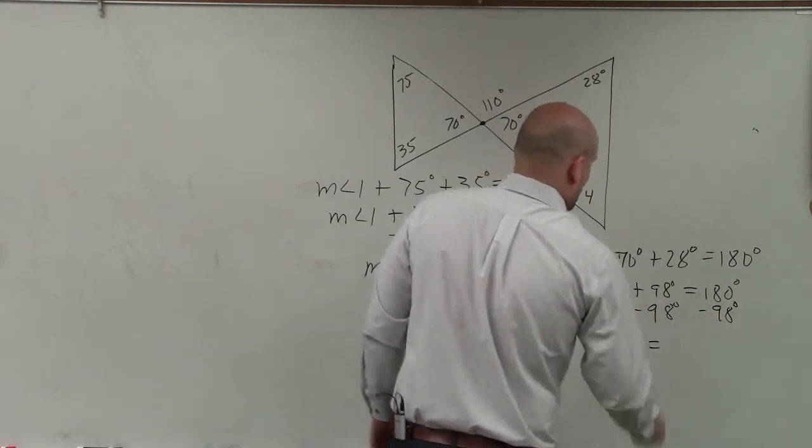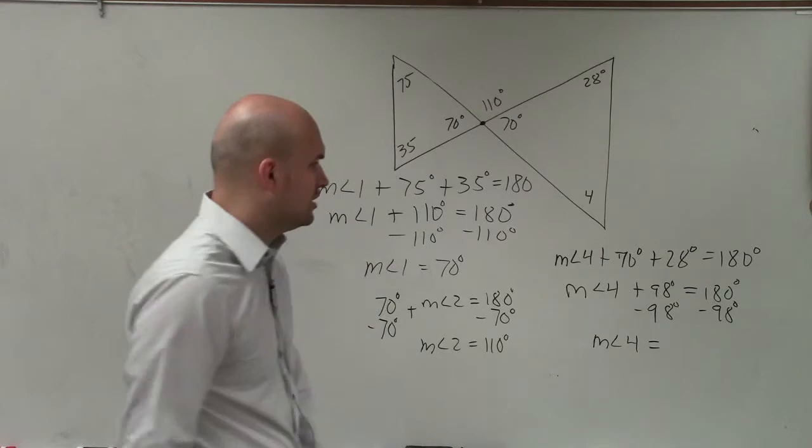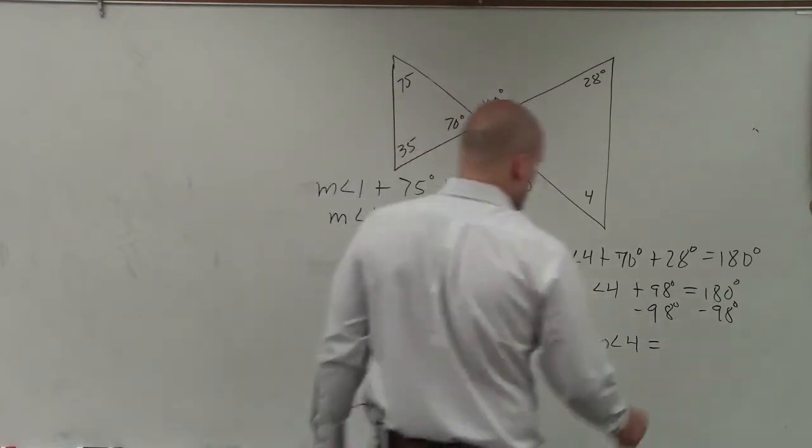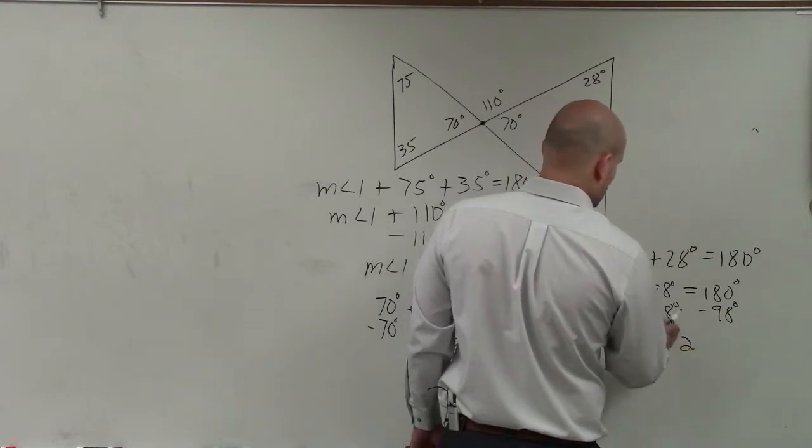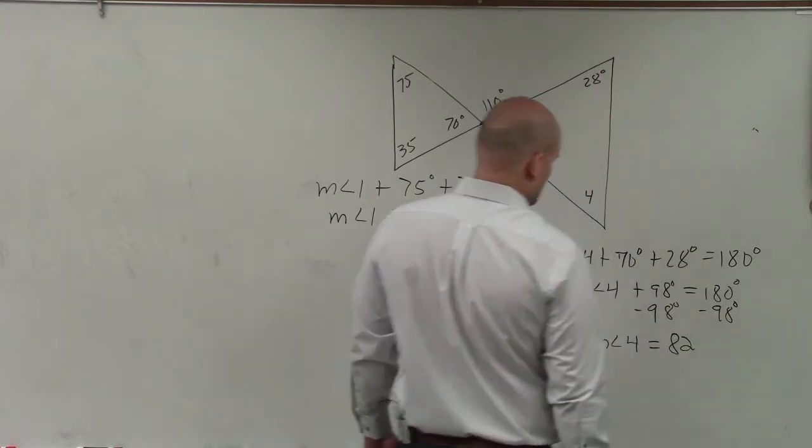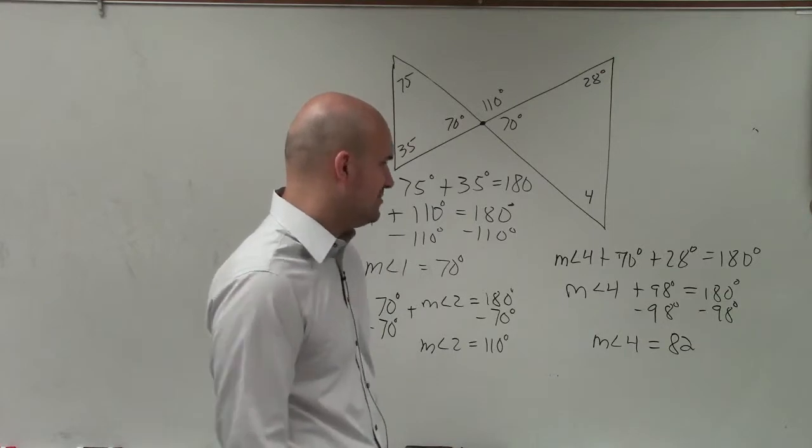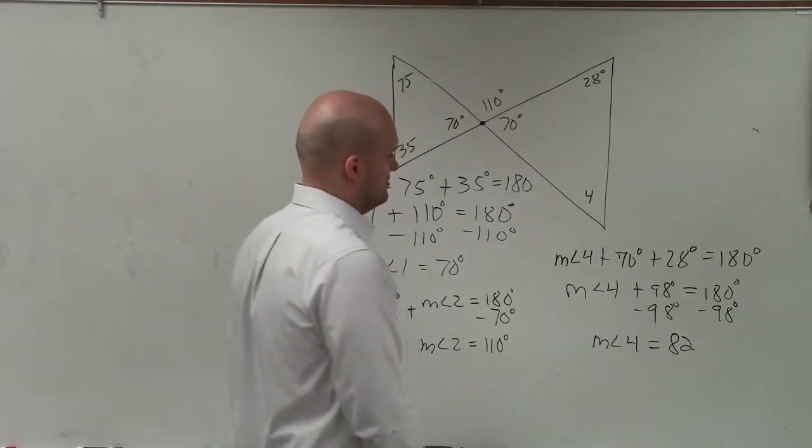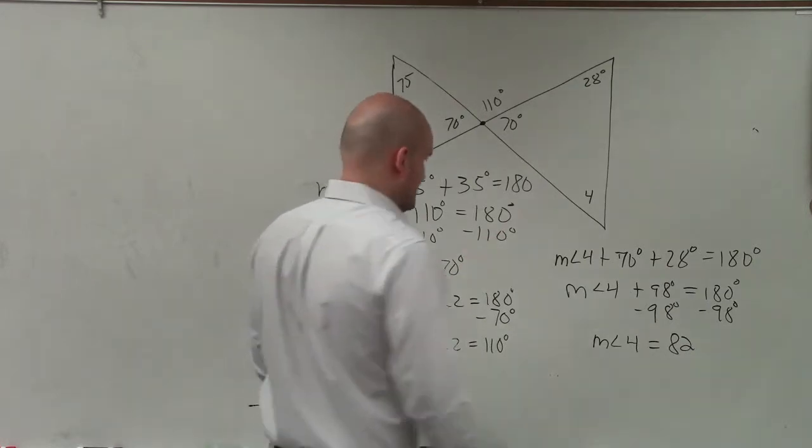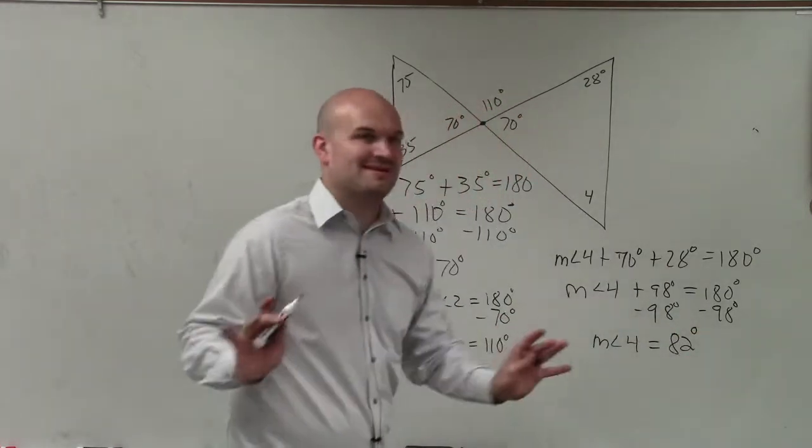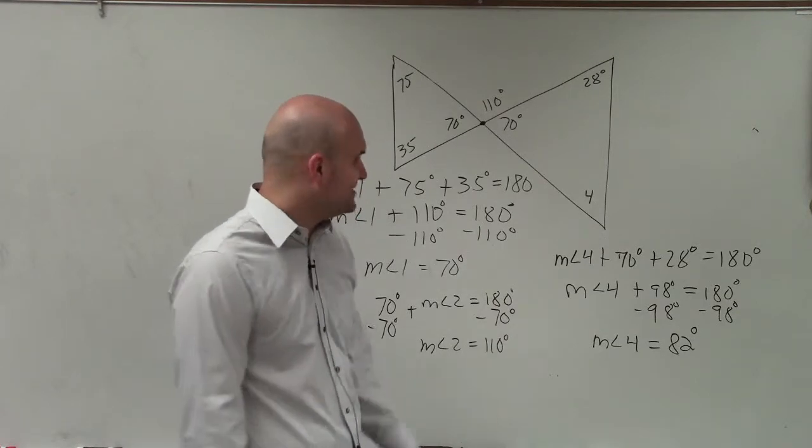Measure of angle 4 is going to equal 72. No, 82. No, that'd be 90, 90, 82, good. Got it, I'm okay, sorry. Equals 82 degrees.